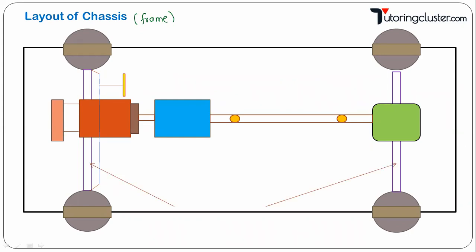Now, the arrows in the diagram — these are called axles. Axles are the components on which the chassis is mounted. Axles are mounted between the wheels — there are four wheels: these are the front wheels and this is the rear.